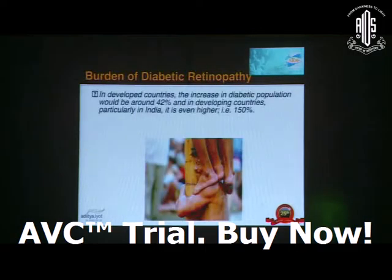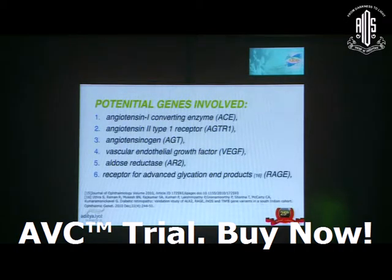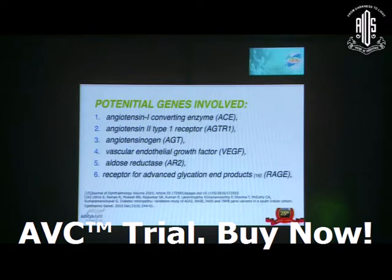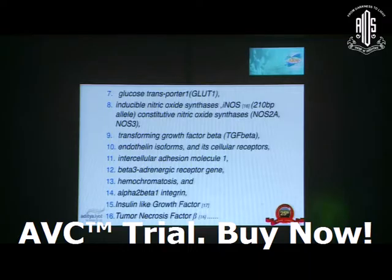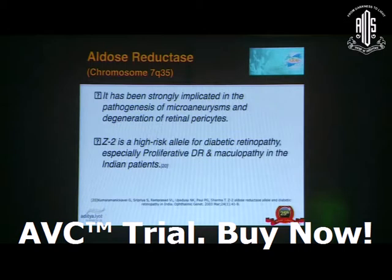Regarding the genetics of diabetic retinopathy — in developed countries the increase in diabetic population is around 42%, and in developing countries, particularly India, it is even higher at about 150%. The potential genes involved include the angiotensin-1-converting enzyme, angiotensin-2 type-1 receptor, angiotensinogen, vascular endothelial growth factor, aldose reductase, receptor for advanced glycation end products, glucose transporter, inducible nitric oxide synthase, transforming growth factor beta, endothelin isoforms and its cellular receptors, intercellular adhesion molecule, beta-3 adrenergic receptor, hemochromatosis, and alpha-2 beta-1 integrin, insulin-like growth factor, and tumor necrosis factor.